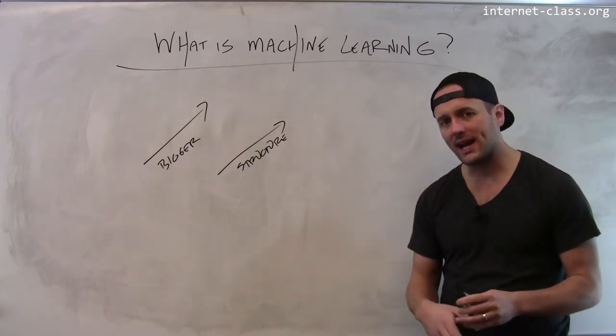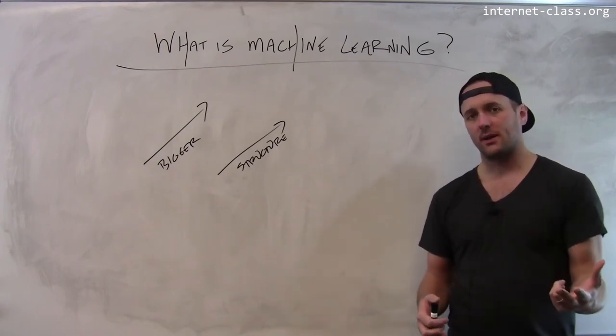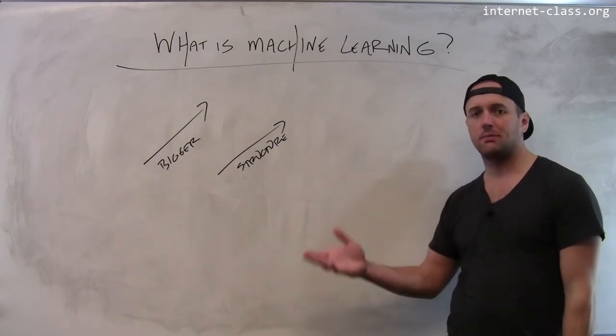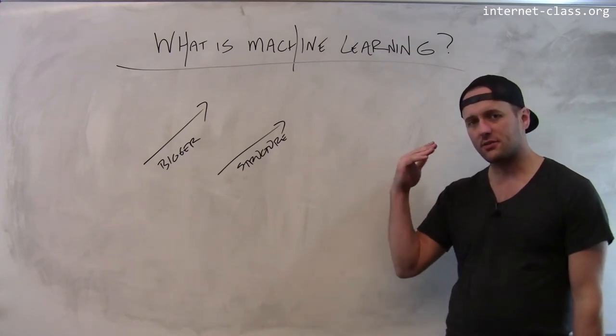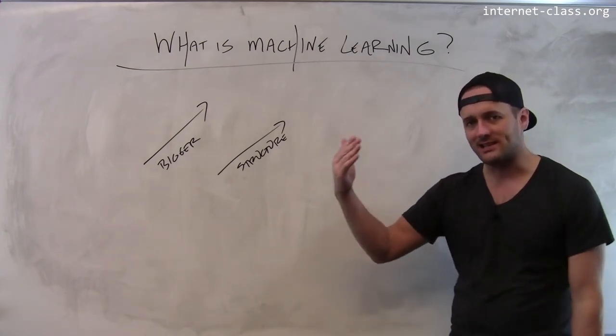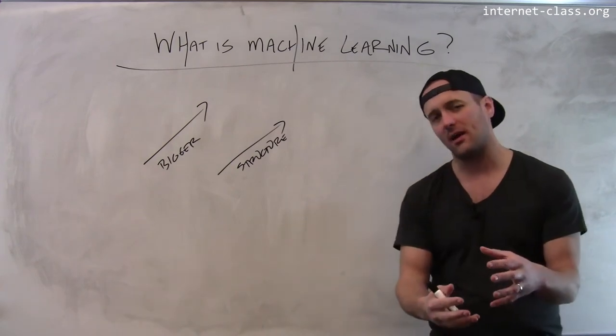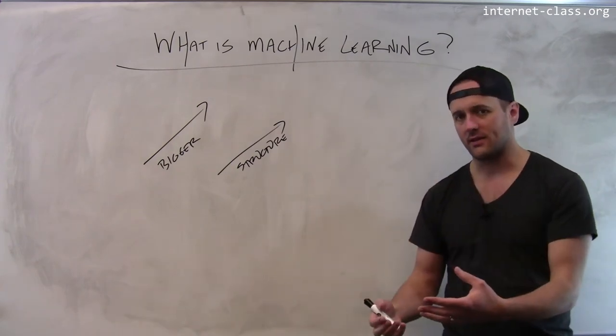If I can train a computer or a robot or various types of systems well enough to respond to patterns and data, they actually don't have to display any actual intelligence. All they're doing is saying, I've seen this happen before and I know what the right thing is to do.